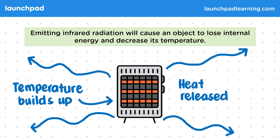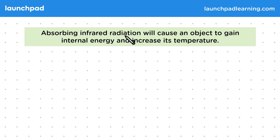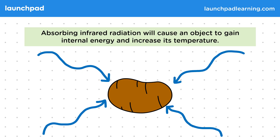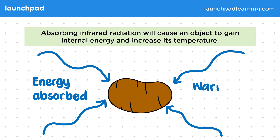What actually happens when something absorbs infrared radiation? Absorbing infrared radiation will cause an object to gain internal energy and increase its temperature. We see this when we absorb the waves emitted by the heater to warm ourselves up, or when we leave ice to melt in a warm room. We also use this in an oven to cook things, like a potato. The oven produces lots of infrared waves, which the potato absorbs, meaning it is absorbing the energy from these waves, which causes its internal energy to increase.